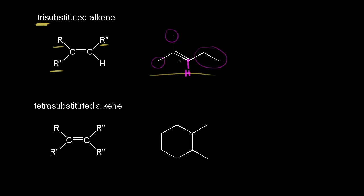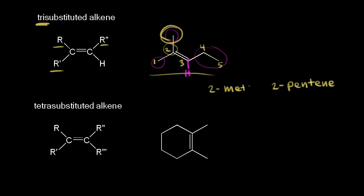To name it, find the longest carbon chain that includes the double bond: carbon one, two, three, four, and five. A five-carbon alkene is called pentene, and our double bond starts at carbon two, so this would be 2-pentene. We also have a methyl group coming off of carbon two, so the complete name is 2-methyl-2-pentene for this trisubstituted alkene.